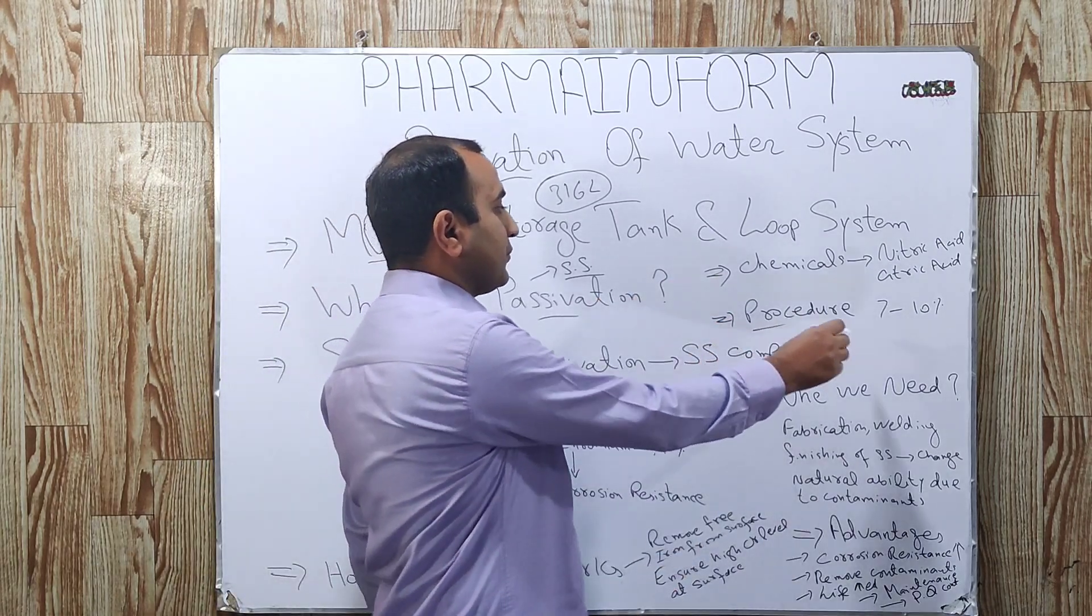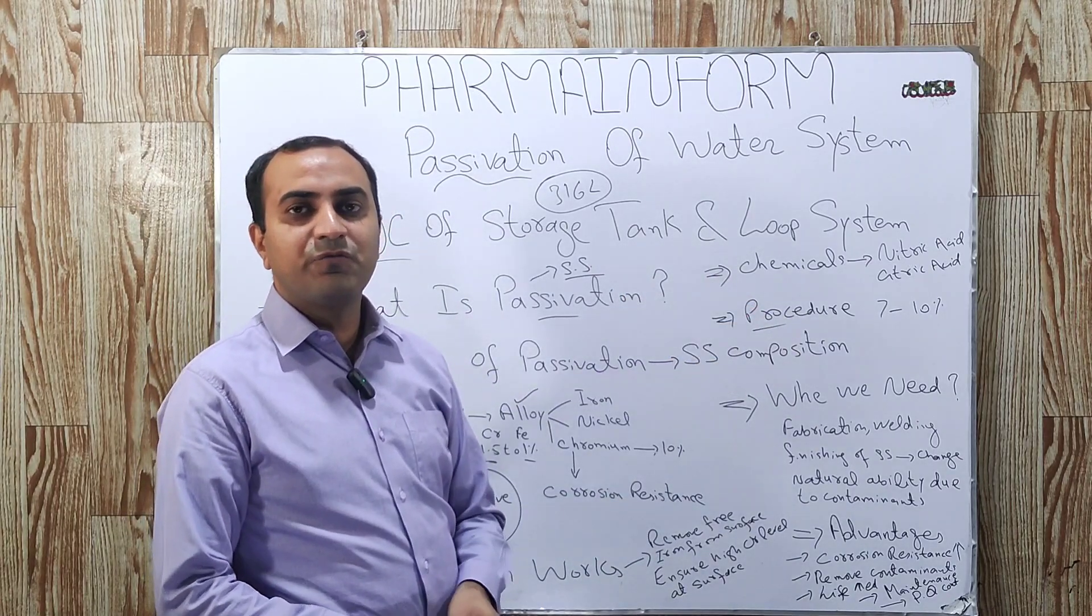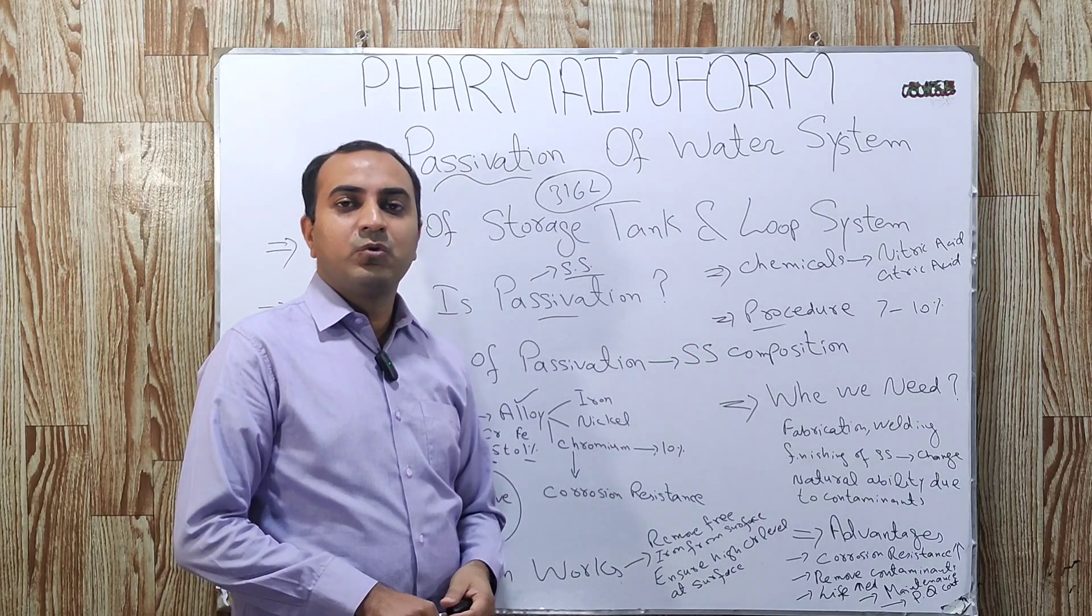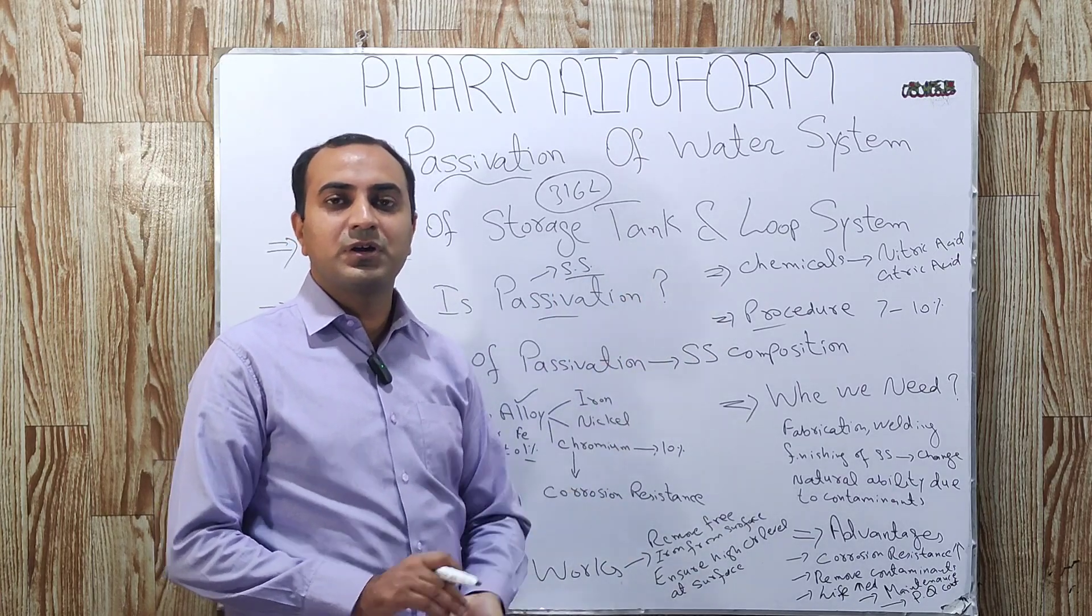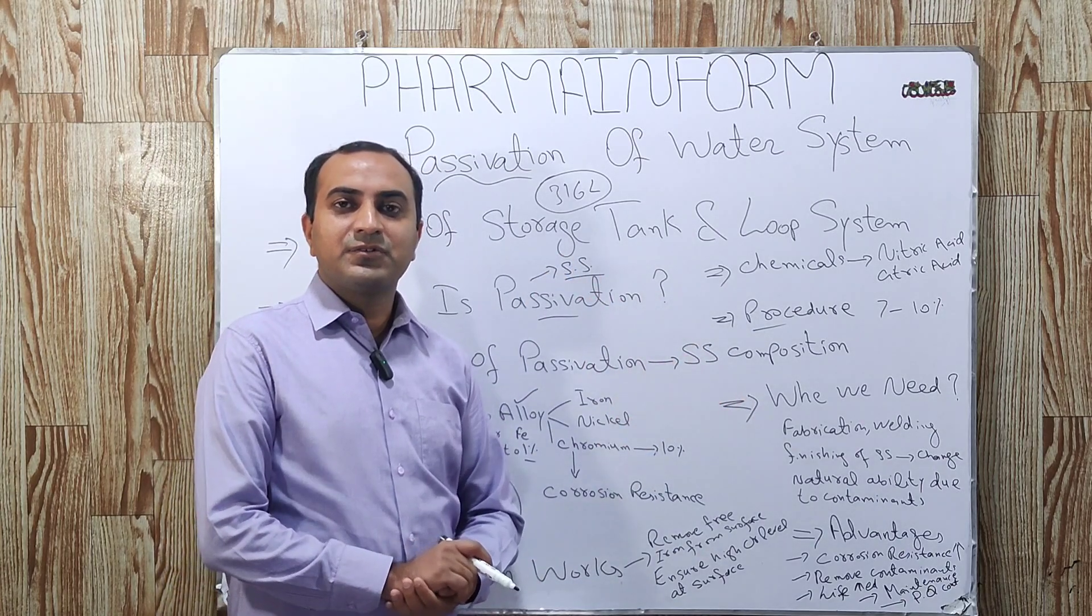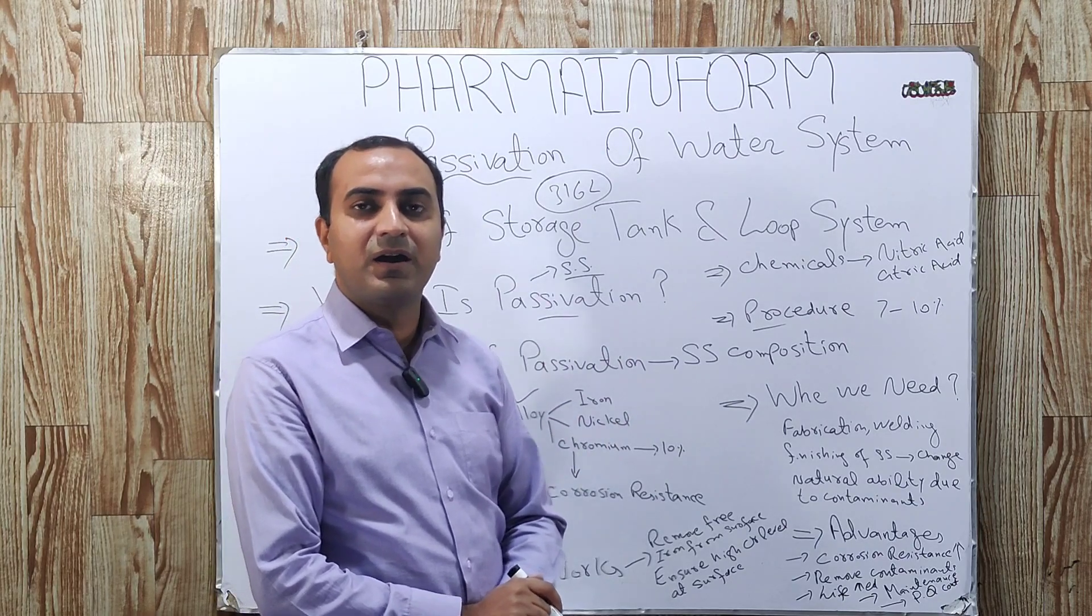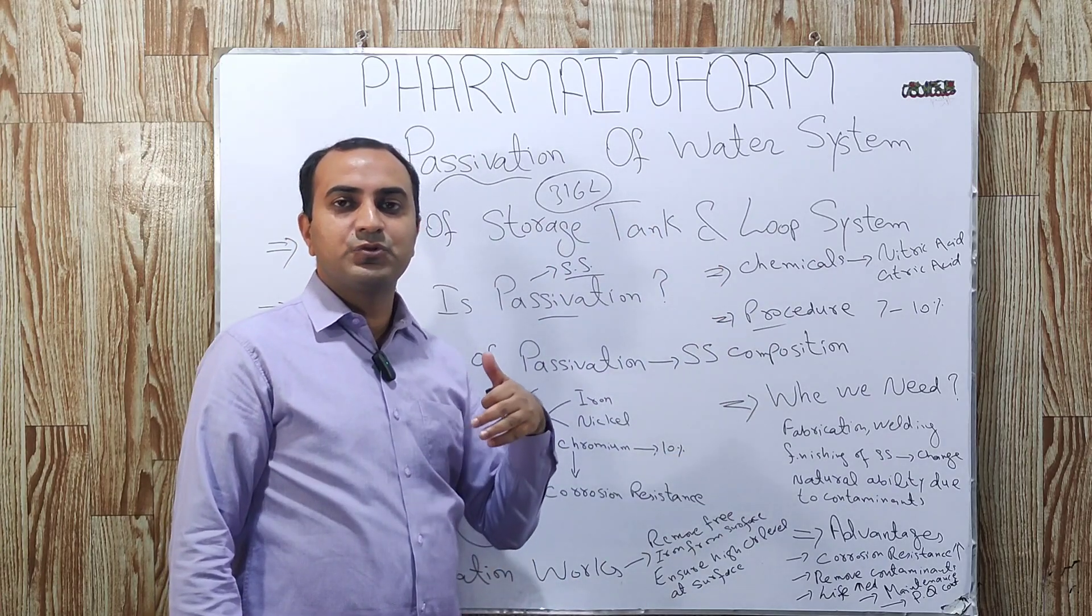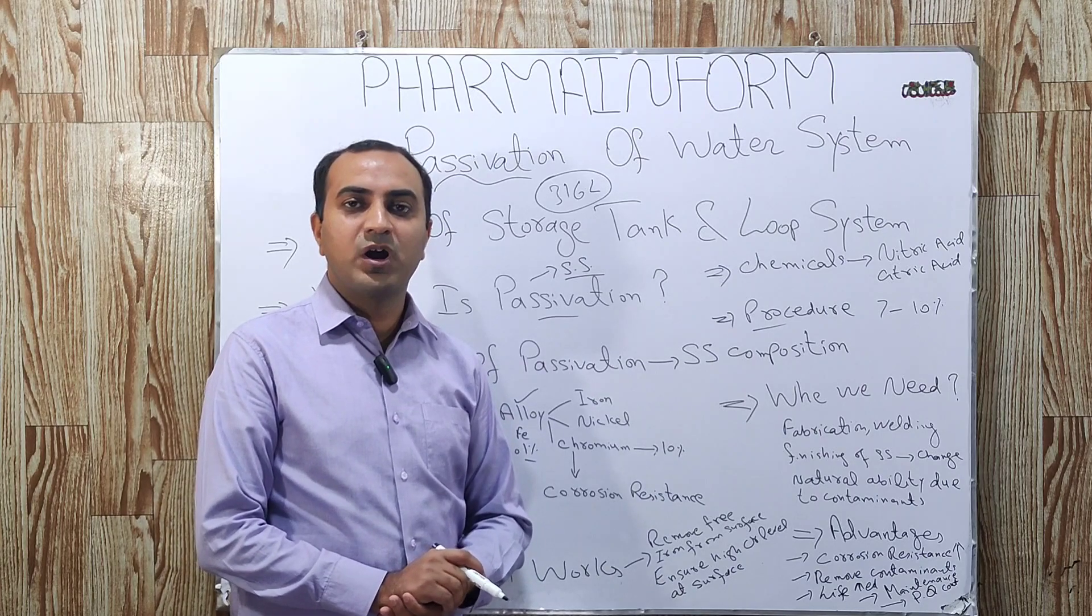Now, most important, what is the procedure of passivation? Generally, we use 7 to 10% of nitric acid. First of all, we prepare 7 to 10% solution of nitric acid as required according to the capacity of our storage vessel. We add nitric acid solution in the storage vessel and close all the user end valves and circulate this nitric acid solution from the storage tank through all the loop circulation system for 2 hours.